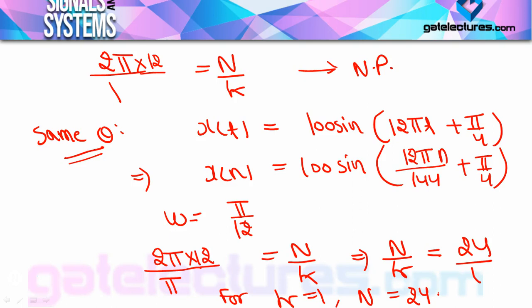These were some basic questions on discrete time periodic and non-periodic signals. The important conclusion to remember: in discrete time, whenever individual sine or cosine is given, it is not necessarily always periodic — you must always check it. But if it is individually proven to be periodic, then their combination will be 100% periodic — no need to check the combination. This ends the concept of discrete time periodic and non-periodic signals. From the next video, we will start the analysis of systems. If you have any doubt, please post in the comment section. Thank you.